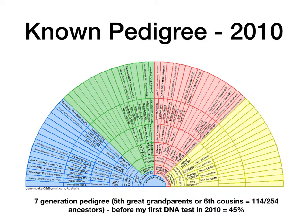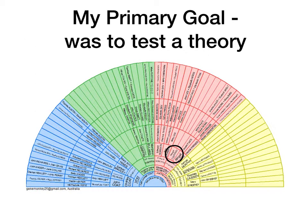This is my name pedigree back in 2010 when I first started testing. I knew 114 out of 254 of my ancestors — that's about 45% of them, looking at a seventh generation pedigree. My primary goal at that time was to test a theory about this infamous George Courtney — my second great grandfather. I have a theory for who his parents are and I can fill in all those pink squares. But I thought when I tested the answer would be immediate, and unfortunately it hasn't been. I'm still looking for George.